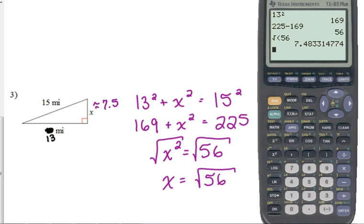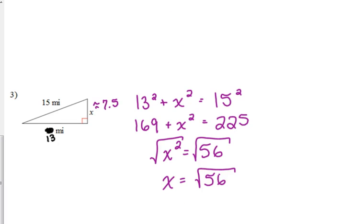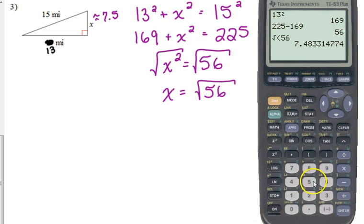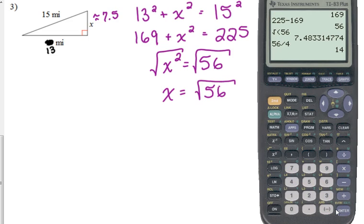But if they want it in simplest radical form, the question that we need to ask ourselves is, is that number divisible by a perfect square? Is 56 divisible by a perfect square? We've done a little bit of this before, but I just want to make sure that I've explained it to everyone. 56 is divisible by 4. Now, we want the biggest possible one, this is the biggest possible one, and I know that because what's left, 14, is not divisible by another perfect square.